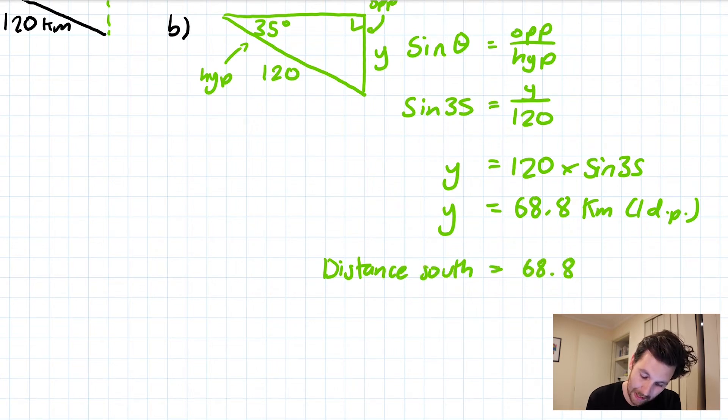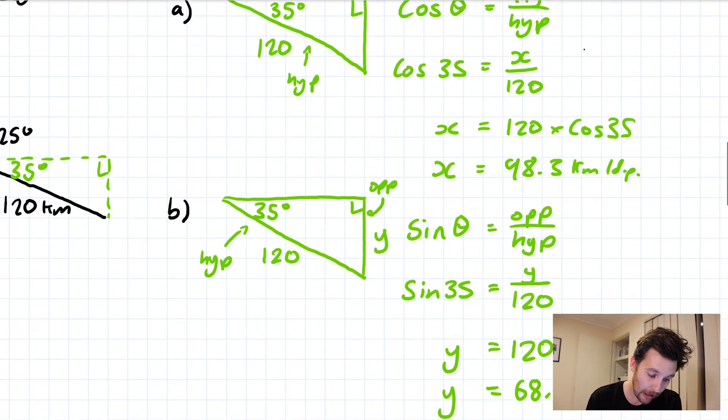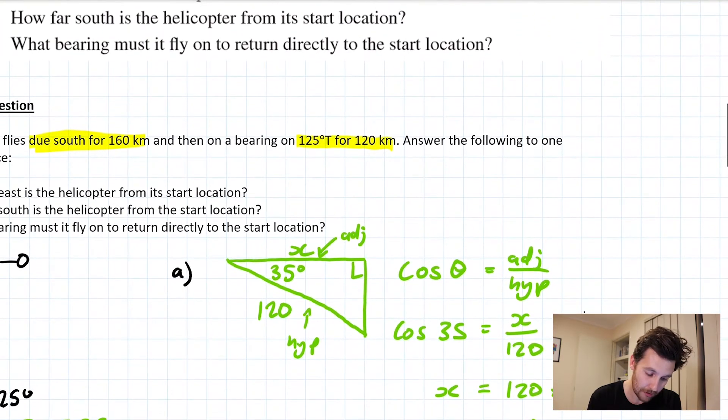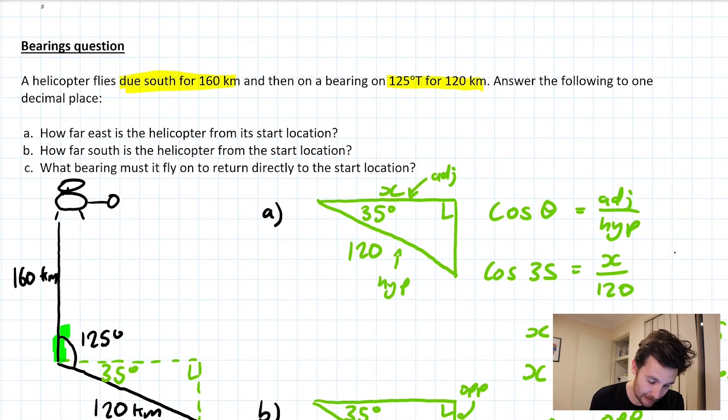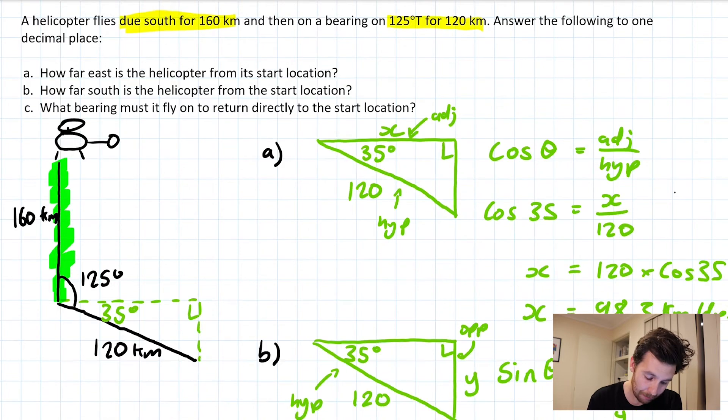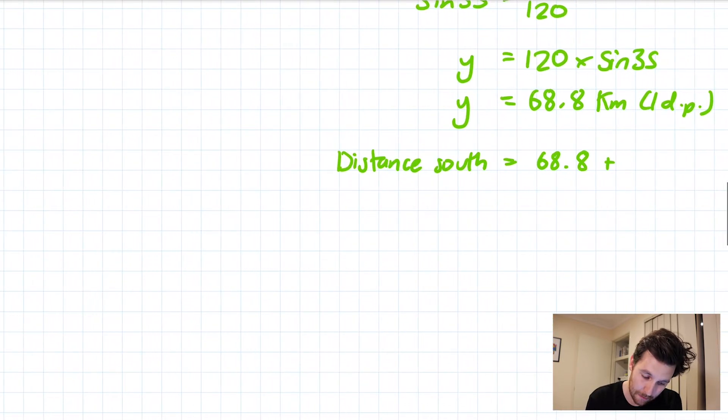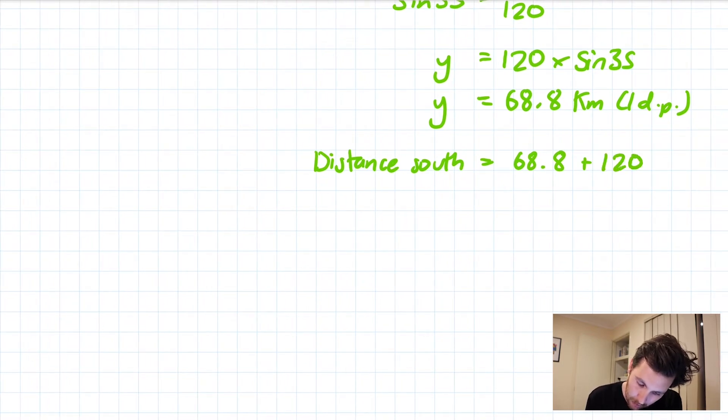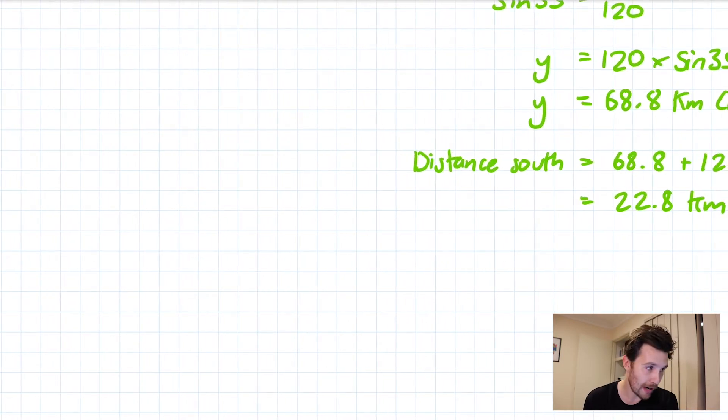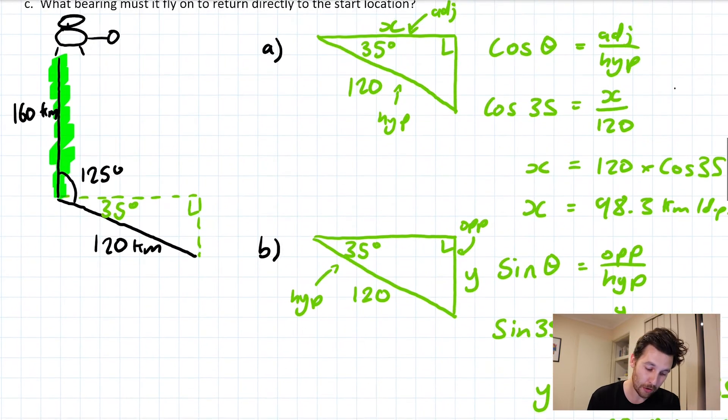So that gives me my distance south is 68.8 plus the 160 km, which will give me 228.8 km.